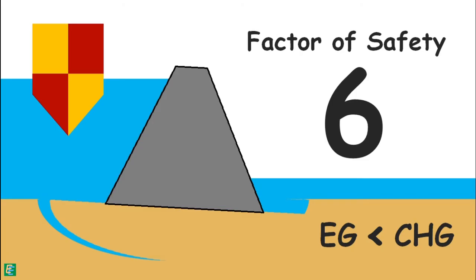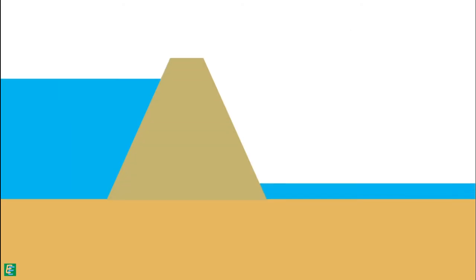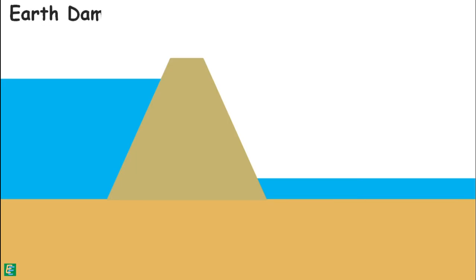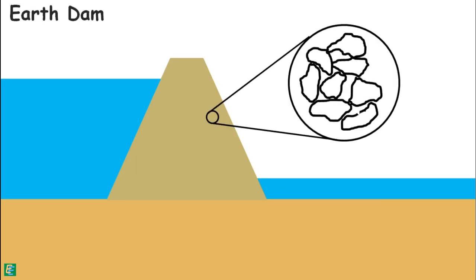If the dam holding the water is an earth dam — that is, it is made up of earth material such as rocks and soil — this backward erosion piping may also occur in the body of the structure itself.